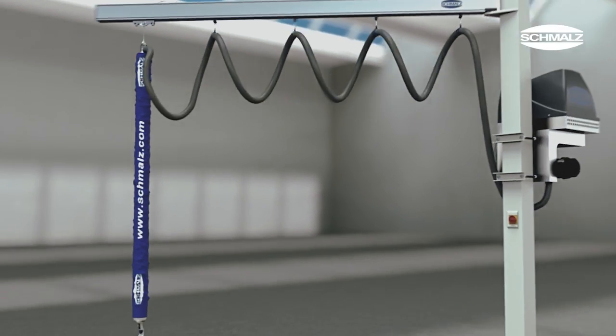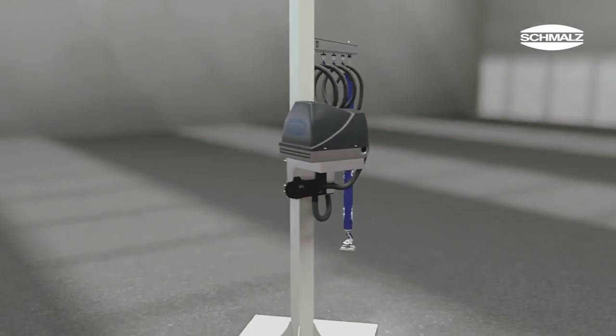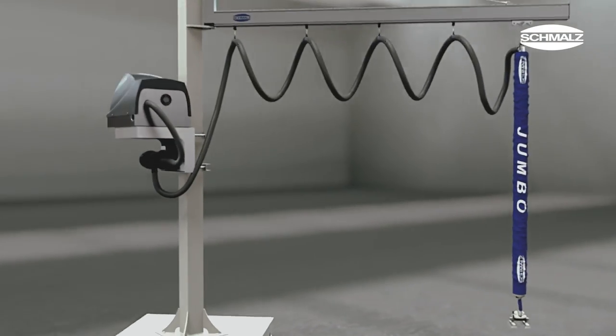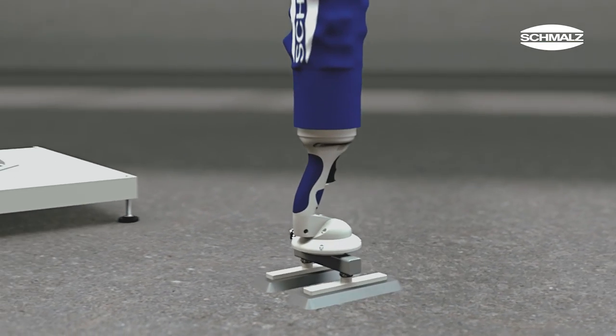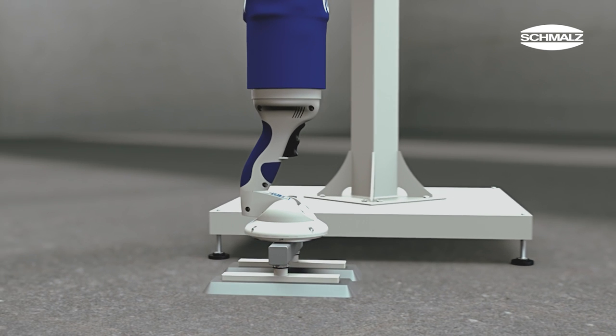The tube lifter JumboFlex enables quick and effortless operation in different logistics processes. The ergonomic design and function of the control handle makes the JumboFlex the ideal lift assist device when handling lighter weights with high cycle rates.